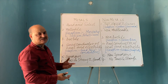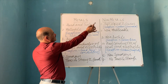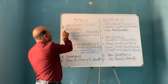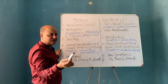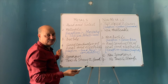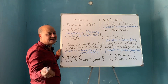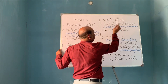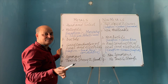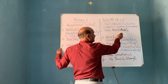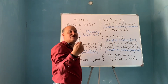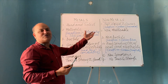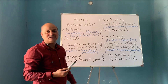Looking at this board, metals are generally hard and solid — iron, copper, aluminum and many more. Non-metals are soft, liquid, and gases. There are exceptions: carbon, which is a non-metal, in one of its allotropes — diamond — is the hardest known substance. Although most non-metals are soft, diamond is the hardest known substance.